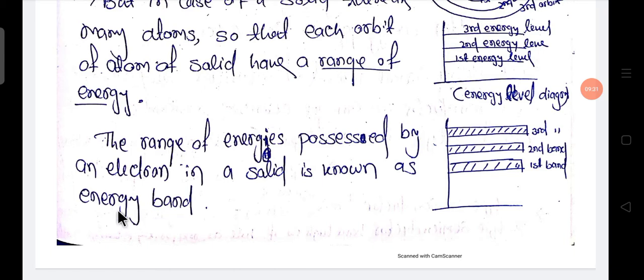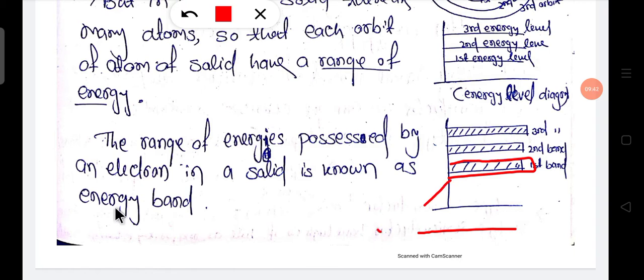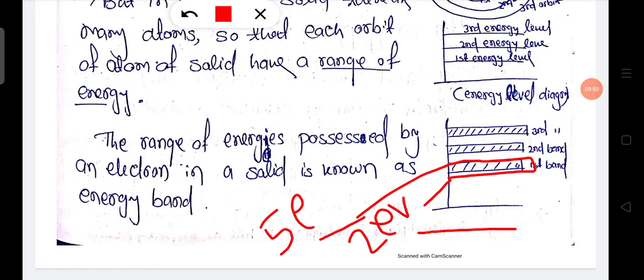Here you can see this is the range — this point is 2 eV and this point is 5 eV. That means the range between 2 eV to 5 eV is the first band, or the energy range of the first orbit of all atoms in that solid. Similarly, there is a second band, a third band, and so on.